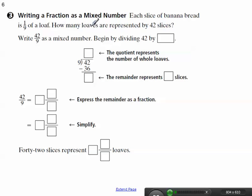The opposite of that then is going to be writing a fraction as a mixed number. So here's a little story. Each slice of banana bread is 1 ninth of a loaf. How many loaves are represented by 42 slices?